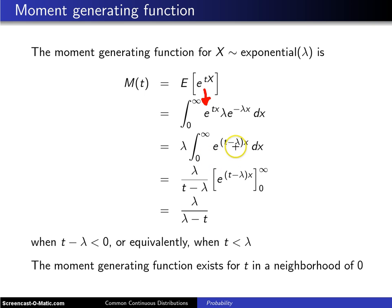So this integral is of the form e to the u du if you just had a t minus lambda out front here. So you compensate by putting a t minus lambda in the denominator here. And you will get e to the t minus lambda x for the integral.